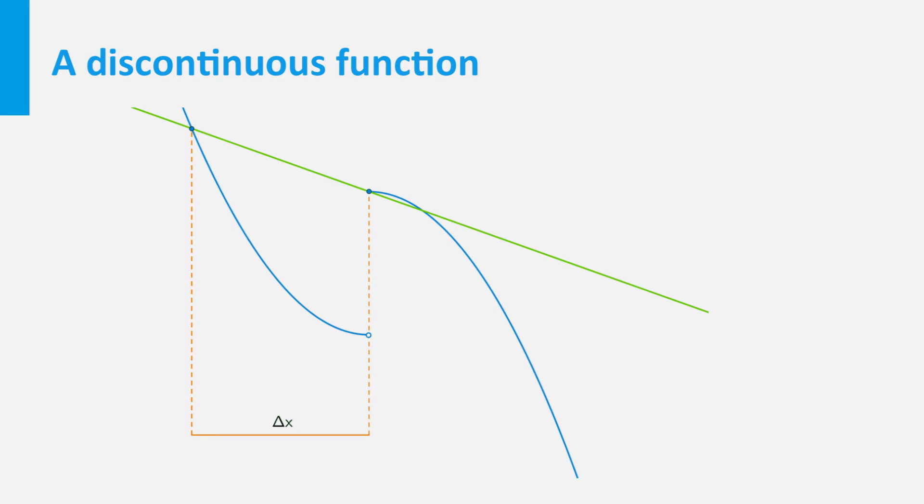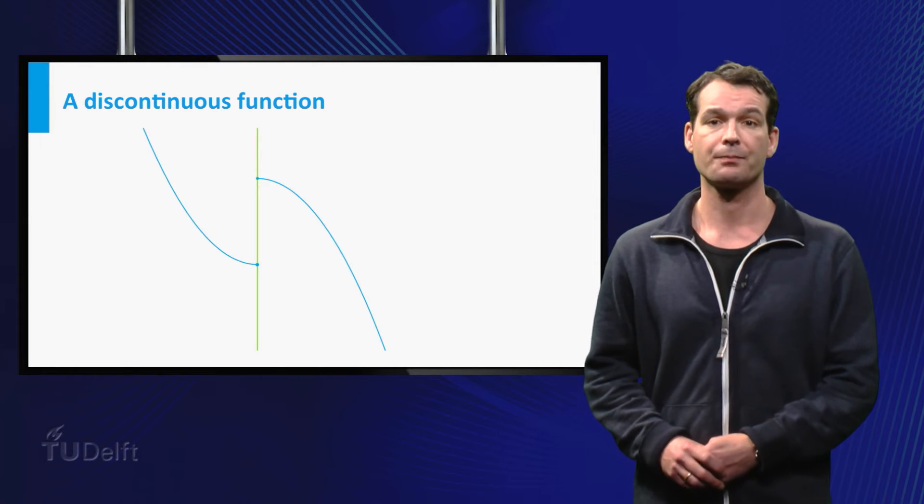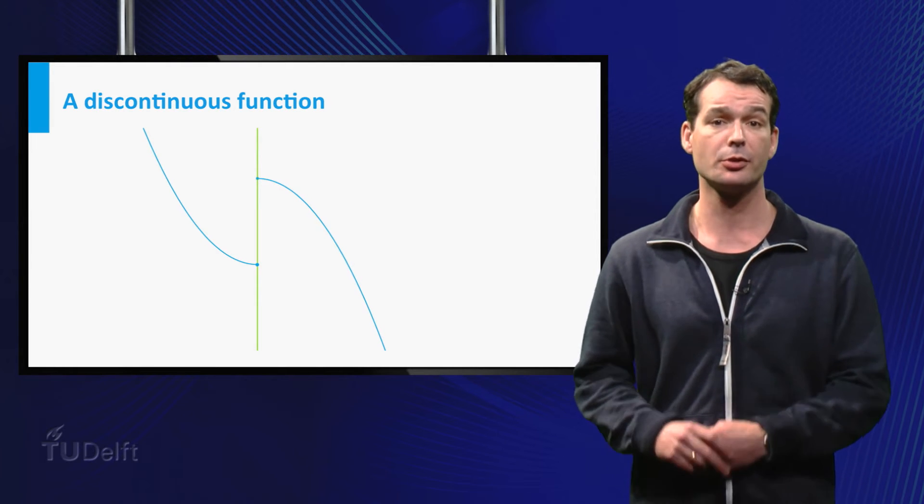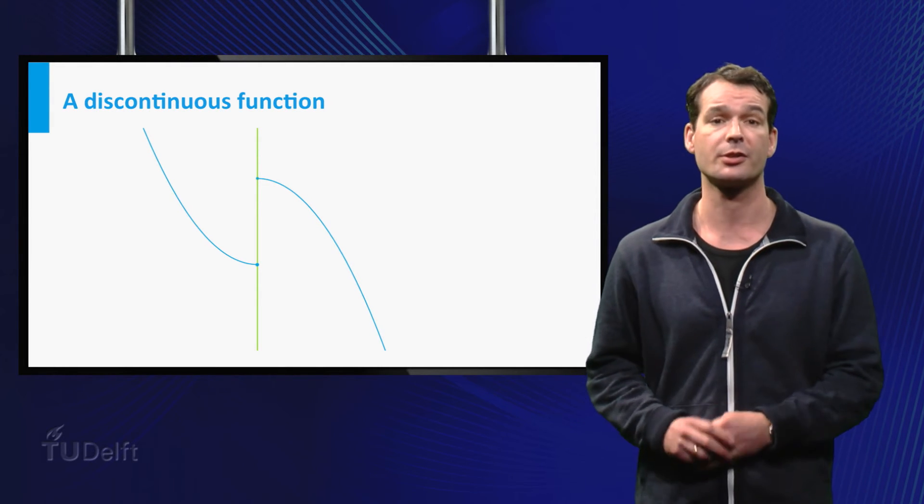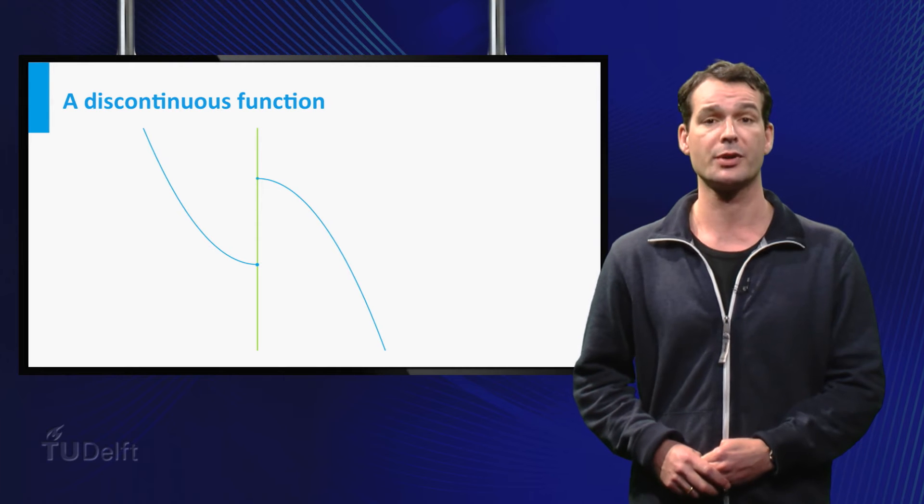Now we do the same with a negative delta x. And you see what goes wrong. The green line does not approximate the same horizontal line that we had before. So in this case the limit of the difference quotient does not exist and we conclude that the function is not differentiable at the point A.